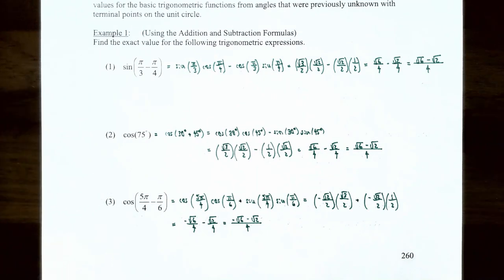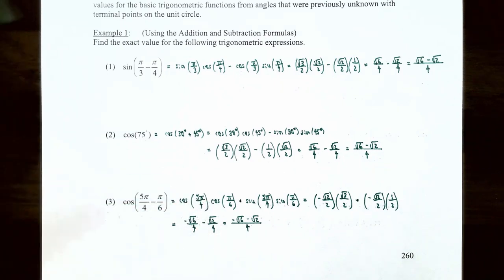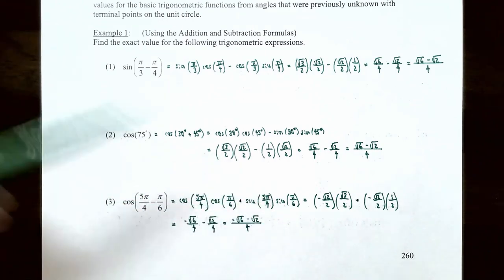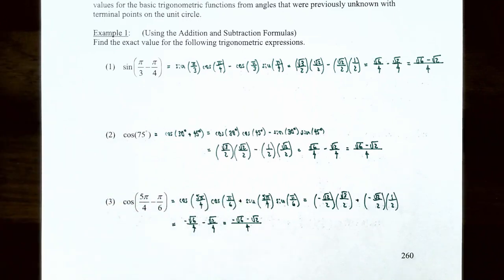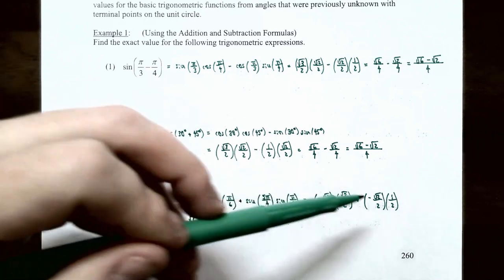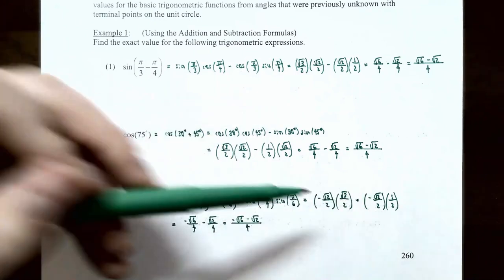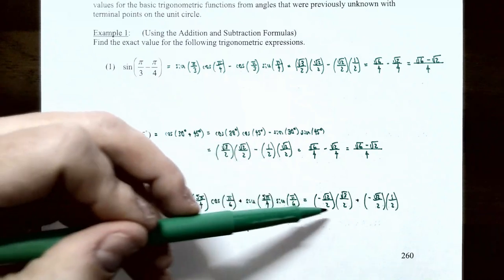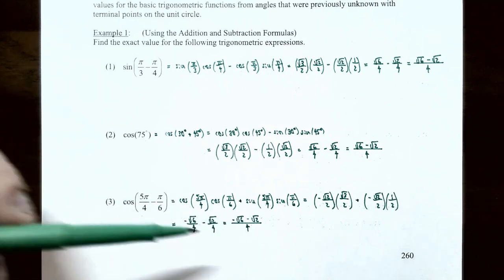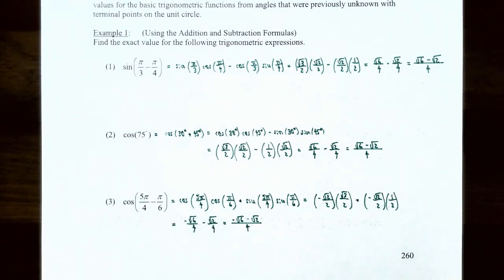Number three: cosine of (5π/4 - π/6). Using the difference formula for cosine: cos(5π/4 - π/6) = cos(5π/4)·cos(π/6) + sin(5π/4)·sin(π/6). From the unit circle: cos(5π/4) = -√2/2, cos(π/6) = √3/2, sin(5π/4) = -√2/2, and sin(π/6) = 1/2. Simplifying: (-√2/2)(√3/2) = -√6/4, and (-√2/2)(1/2) = -√2/4. So the exact value is (-√6 - √2)/4.